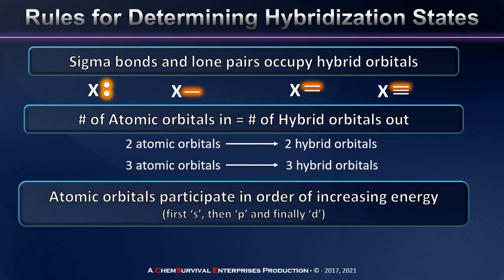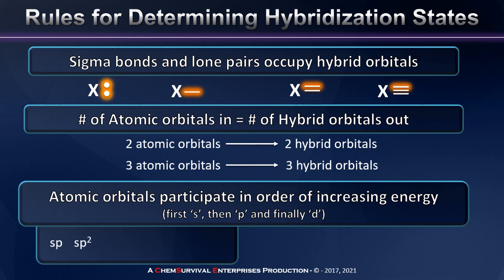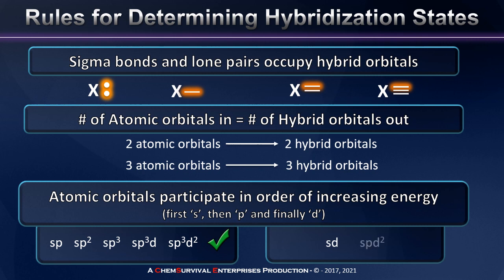The third and final rule is that atomic orbitals will participate in order of increasing energy. We always begin with S, then progress to P, and finally, if necessary, use D atomic orbitals to determine our hybridization. Commonly found hybridizations include SP, SP2, SP3, SP3D, and SP3D2. However, other hybridizations like SD, SP3D2 with skipped orbitals, or PD2 do not occur, because in those cases we've failed to use the lowest energy set of atomic orbitals necessary to create the hybrid orbitals we need.